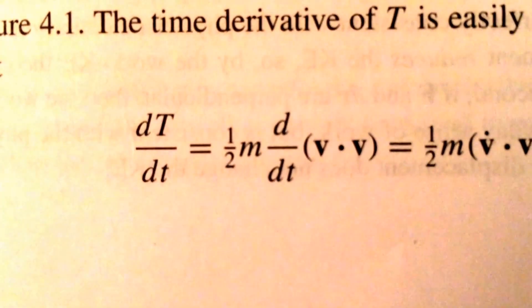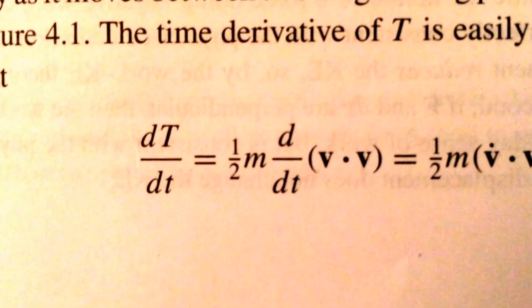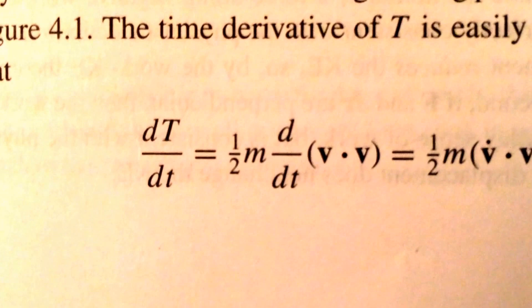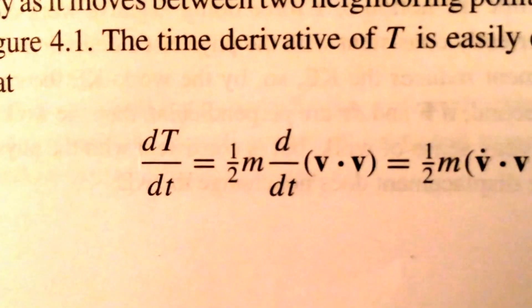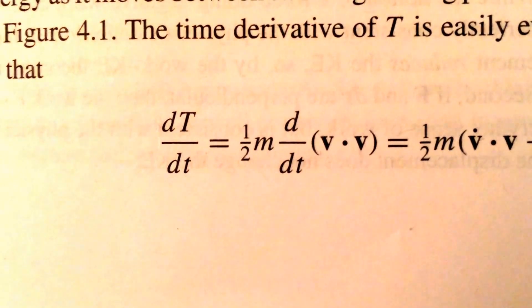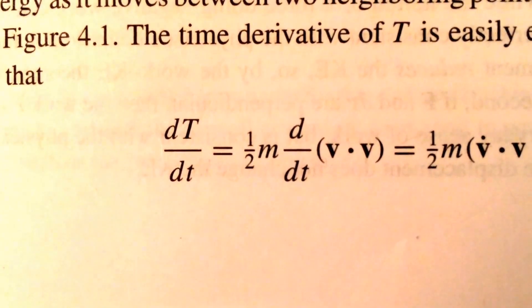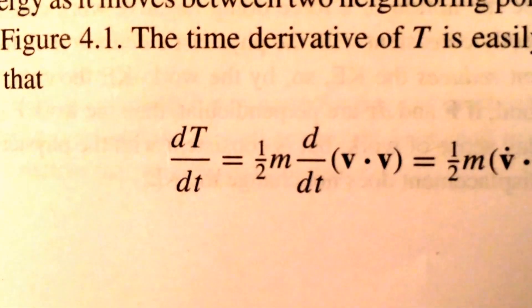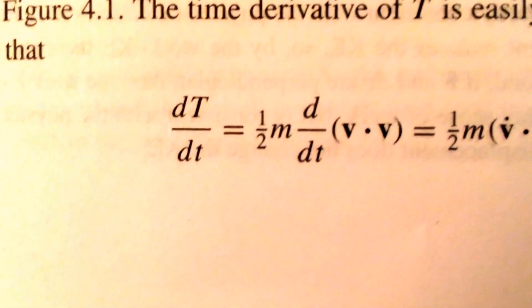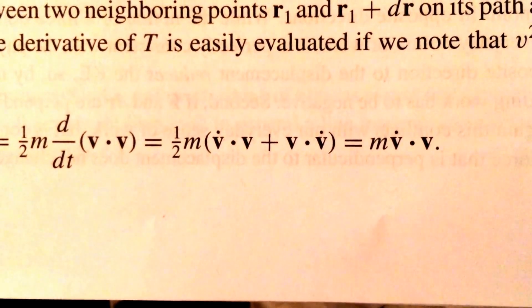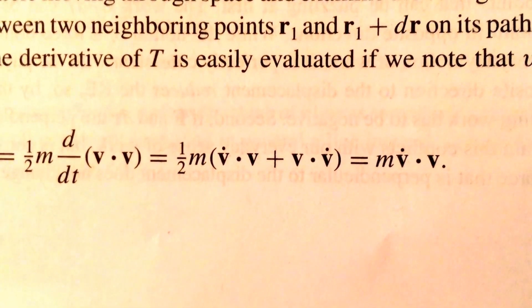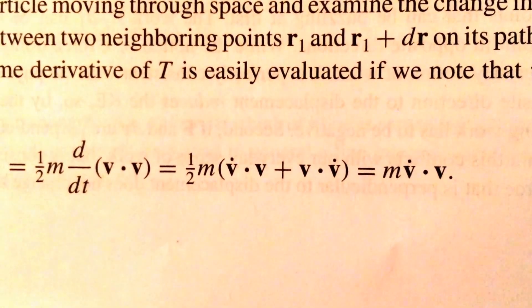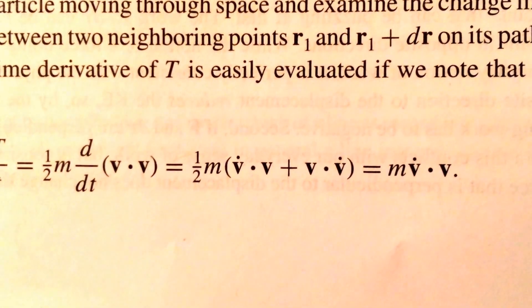If we take the time derivative of the kinetic energy, we find that the time derivative is equal to one-half the mass times the time derivative of the velocity vector dotted into itself, because the square of the length of a vector is the dot product of the vector with itself. Using the product rule, this works out to be the mass of the particle times its velocity dotted into the acceleration of the particle.